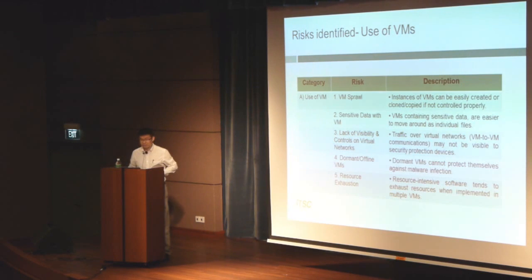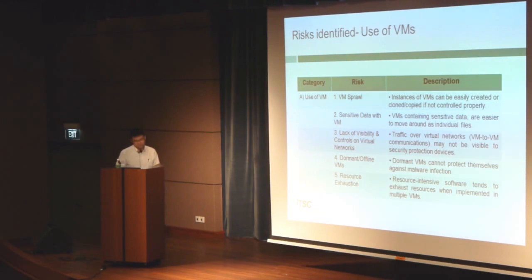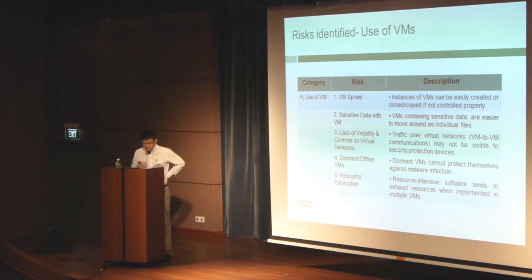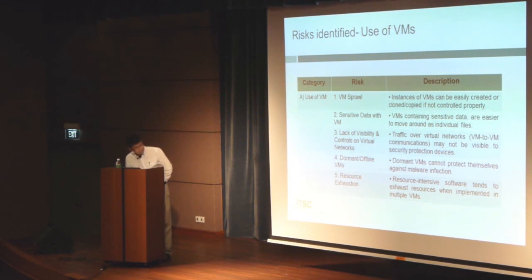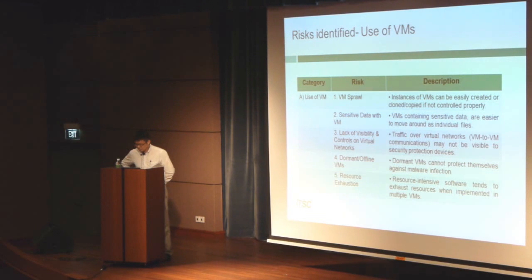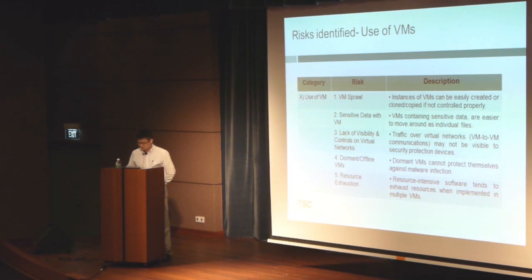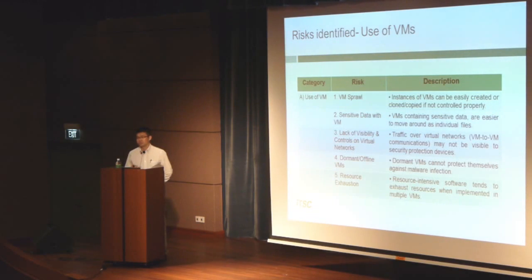The fourth category is dormant and offline VMs. Remember, virtualization is a wonderful technology that can do many things. However, it's likely that dormant and offline VMs are excluded from essential security monitoring functions. And the last risk category is resource absorption — this refers to the case where resource-intensive software attempts to consume all the resources on the host server, which is implemented across multiple VMs. You have to take note of software that may be consuming far more resources than expected.